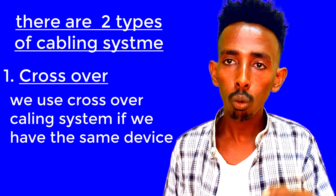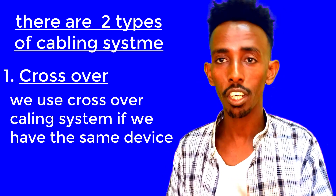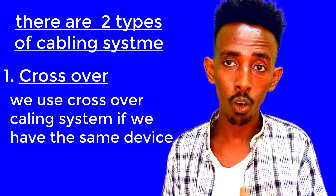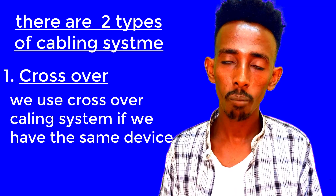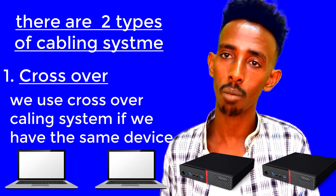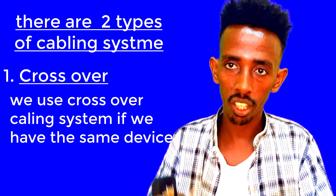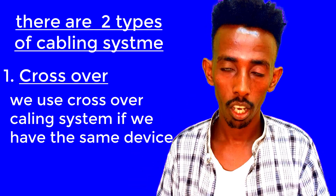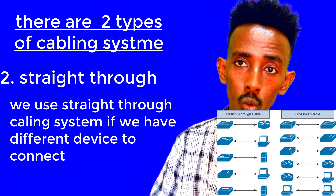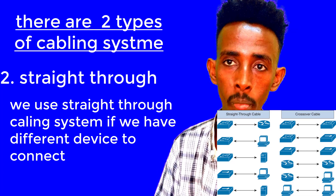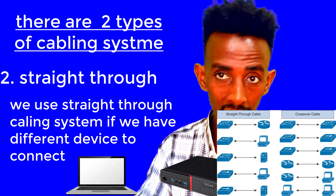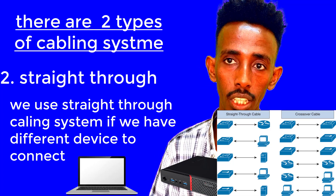If you want to use the same device, you can connect the same device with the same device. In this case, you can use the laptop or computer to connect to a switch or router. The device is connected to the device. The device has been connected. Straight through the network — the device is connected to the network. We can use the computer, router, or switch.